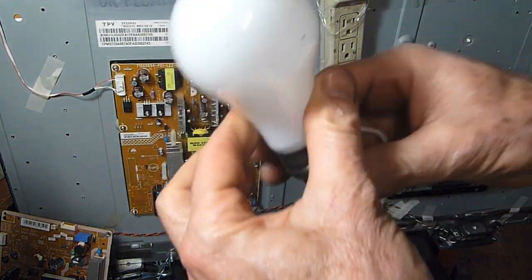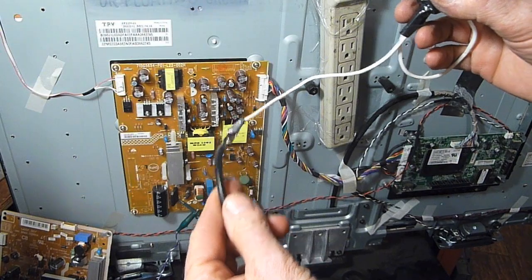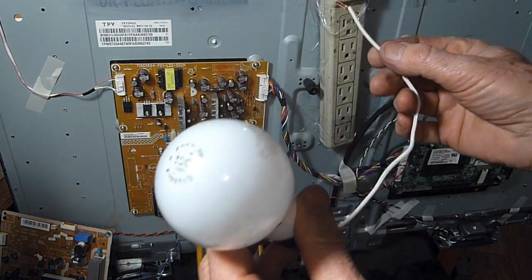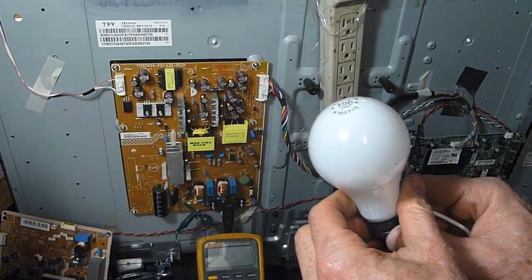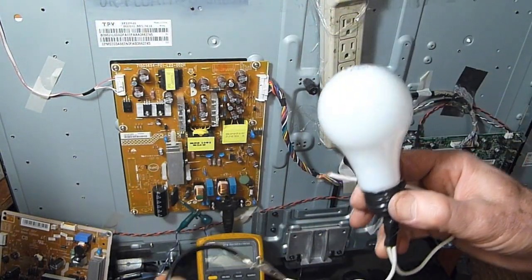So for example, if you were to take a light bulb and hook a ground wire to it from an earth ground and touch it to the chassis, you'd see the light bulb come on. And that was the reason you had to have an isolation transformer.